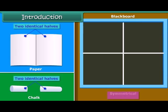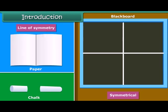These objects are called symmetrical and the line along which the object is folded is called the line of symmetry. Today let us learn more about symmetry.